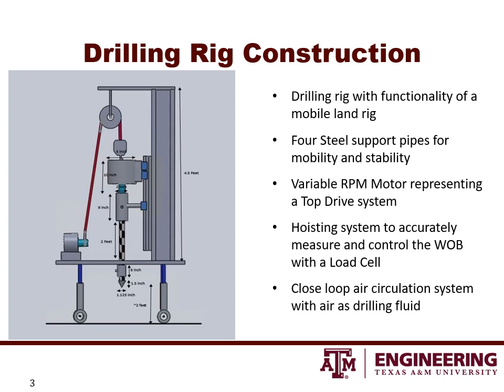We are going to have a 2 horsepower variable RPM motor representing the top drive. The hoisting system will be able to raise and lower the drill string during the process to control the weight on bit. For the drilling mud circulation system, we are going to use air pumps to pump air through the swivel and through the flow outlet. We believe that using air will be sufficient to cool the bit and carry all the cuttings. Although it is not shown in the solid model, we will fabricate a closed loop circulation system with enough seals so that water or any other fluid can be used as mud if necessary.